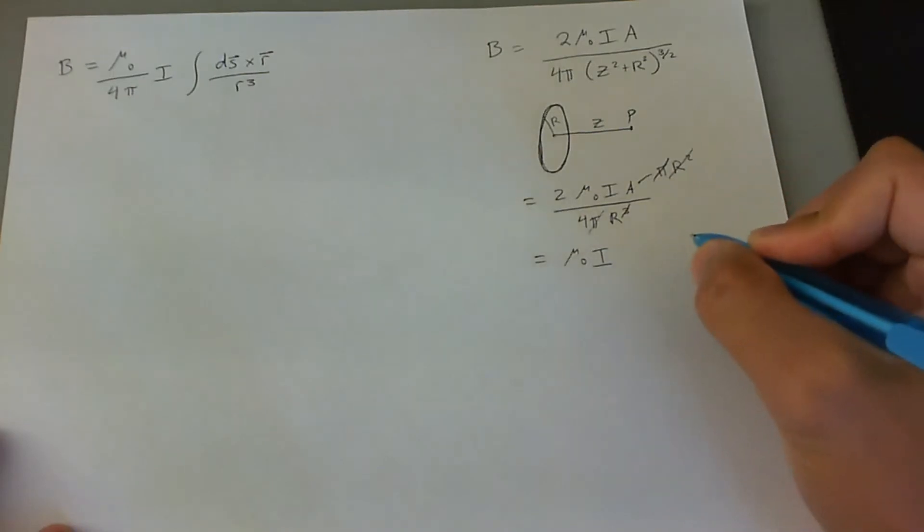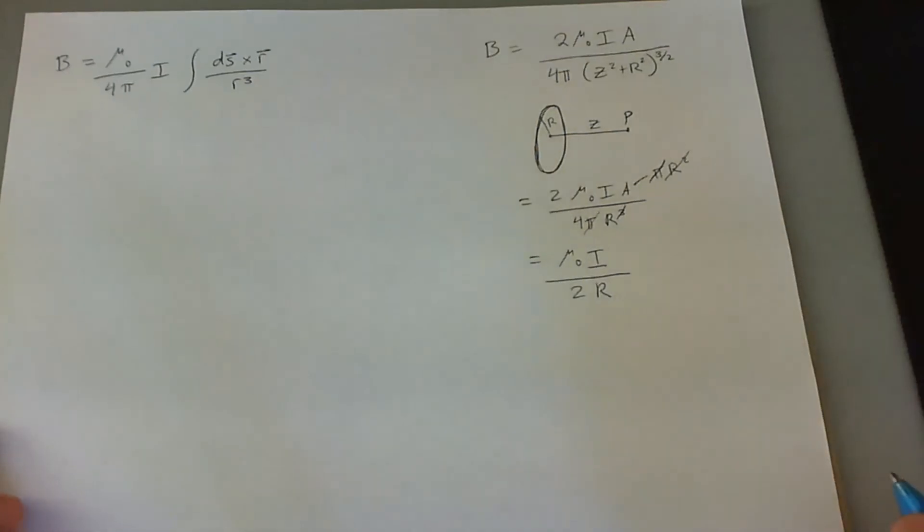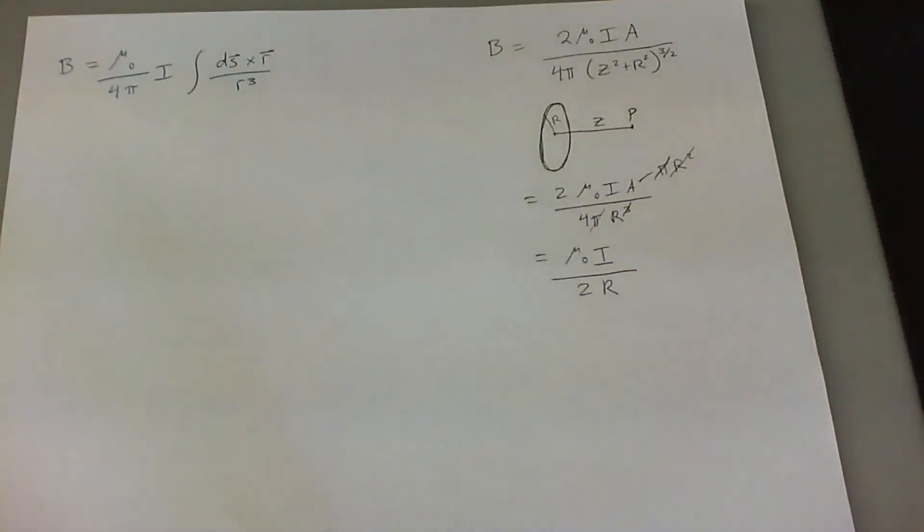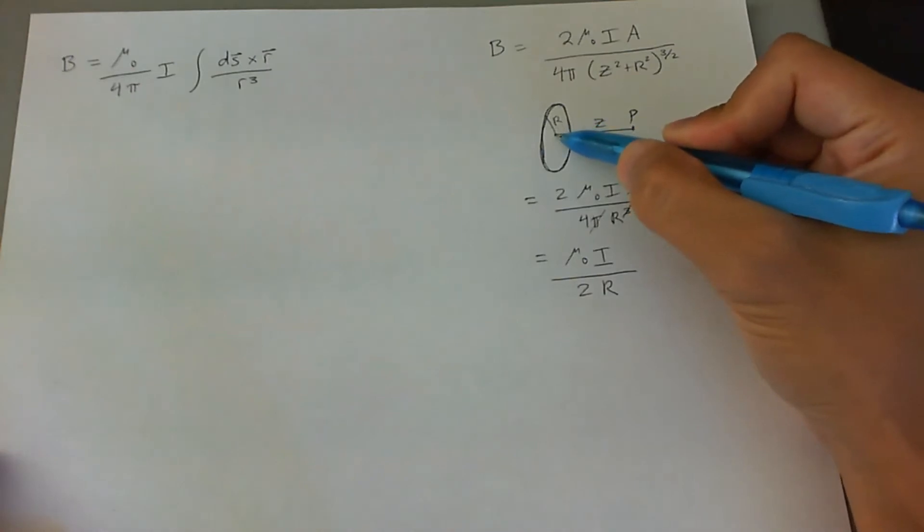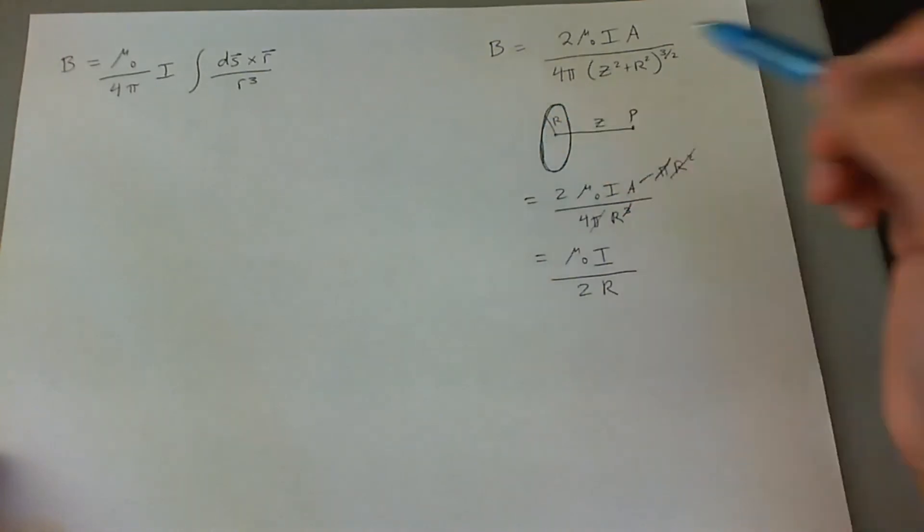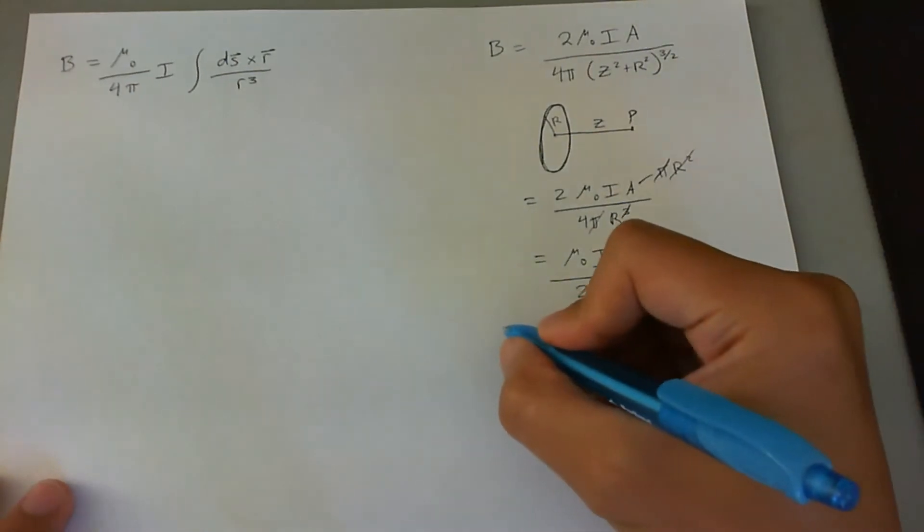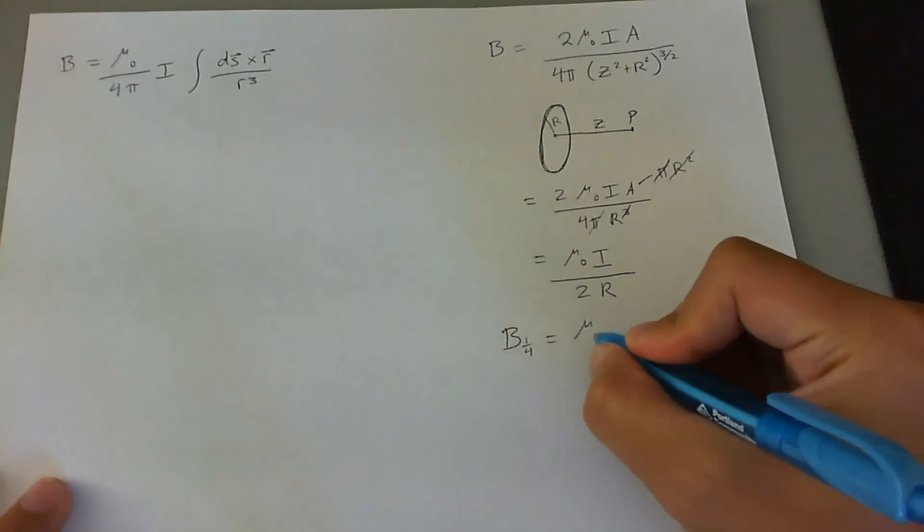Now we have mu naught i divided by two r, and that's going to be the equation of point p inside the center of a full circle in terms of the B field. However, there's only a fourth of a circle, so that's only going to make a fourth of the effect. The B field for one fourth of the circle is actually just going to be this divided by four.